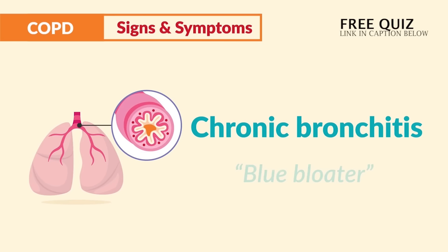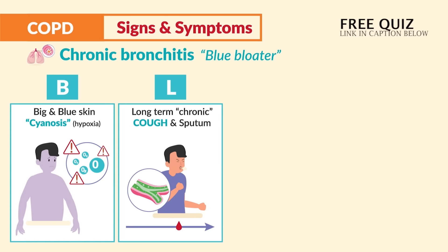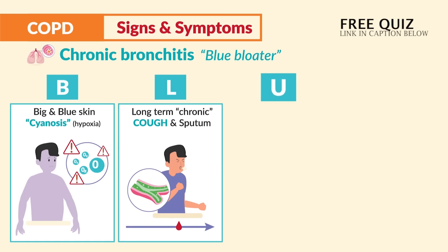For chronic bronchitis, use the acronym BLUE: B is for big and blue skin — cyanosis from hypoxia, as patients are typically obese with a blue body. L is for long-term chronic cough and sputum, with cough being the earliest indicator. U is for unusual lung sounds — crackles and wheezes. E is for edema that shows up peripherally.